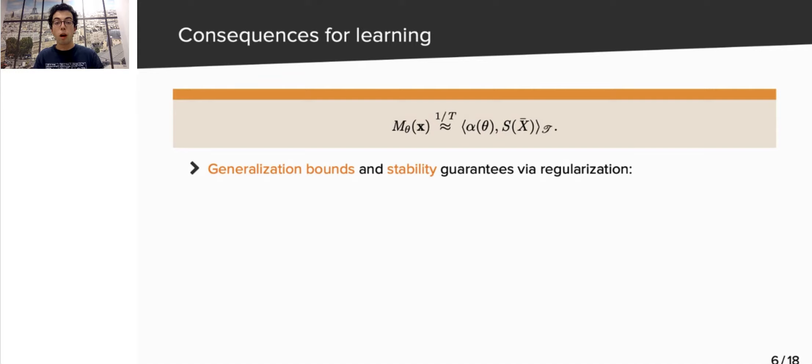As a consequence of this main result, we are able to derive generalization and stability bounds. The idea of generalization is to upper bound the gap between train error and test error, but we won't talk about this now, and we refer to our paper for details. As for stability, the goal is to ensure robustness to noise and adversarial attacks. Let's give a few details on this bound, which is easier to derive.